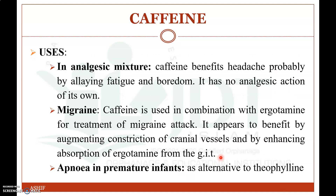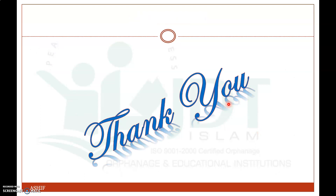The uses of caffeine: it is mainly used in analgesic mixtures even though it has no analgesic property of its own, but it shows a promising action in headache when combined with paracetamol. It is also used in combination with ergotamine for the treatment of migraine attacks, enhancing the constriction of cranial vessels and improving absorption of ergotamine from the GIT. It is also used for apnea in premature infants as an alternative to theophylline. That concludes the topic of CNS stimulants.